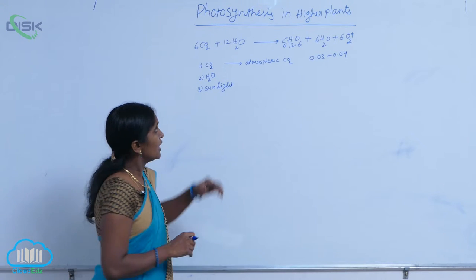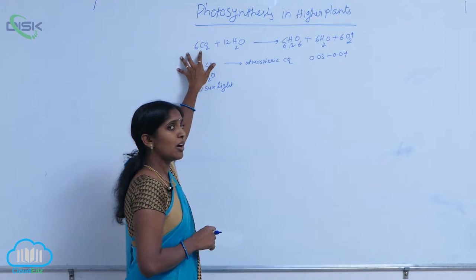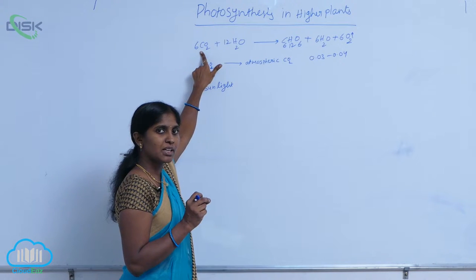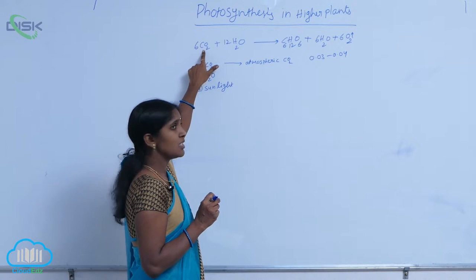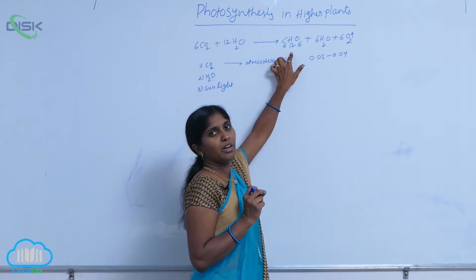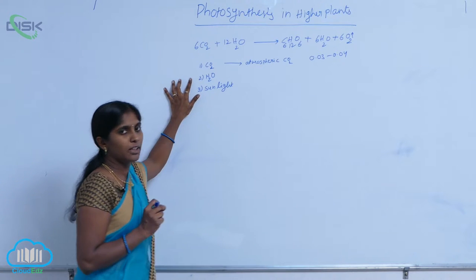It means in the reaction you see here, the carbon source for photosynthesis is carbon dioxide. So the carbon is utilized for the production of carbohydrates. Next, water.